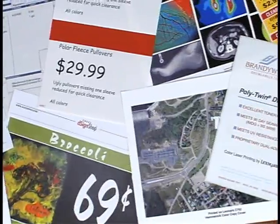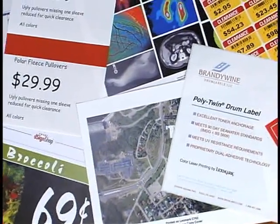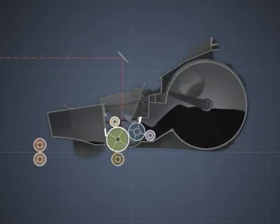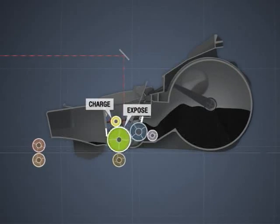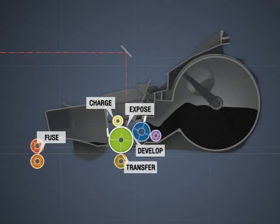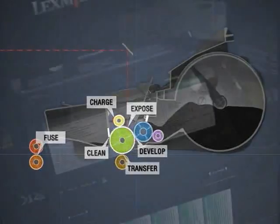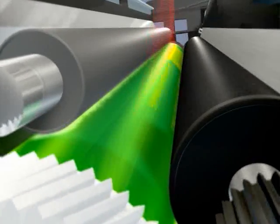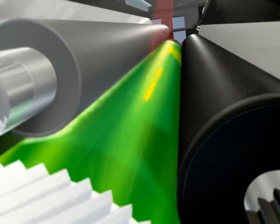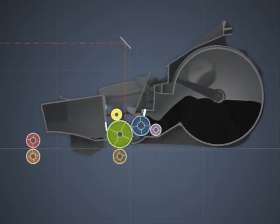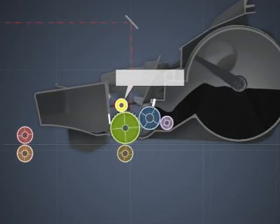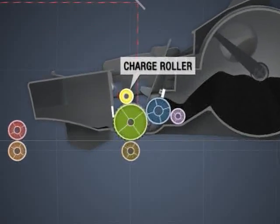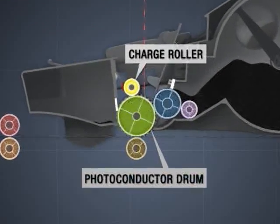How does a laser printer transform characters into hard copy? There are six distinct processes involved in producing a laser printed page, all of which occur within the cartridge. Lexmark laser technology uses an electrophotographic process to transfer digital data to paper. The process begins with the charge roller, which applies a uniform charge to the surface of the photoconductor drum.